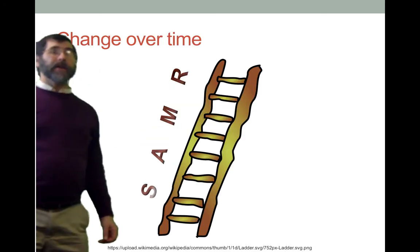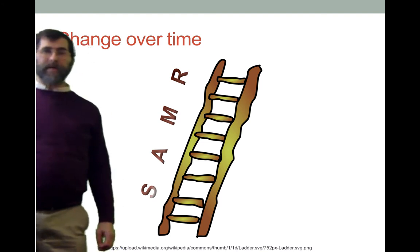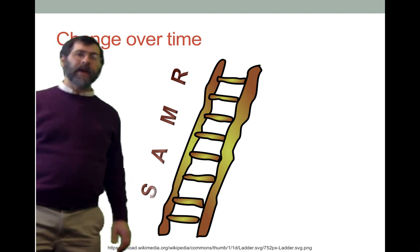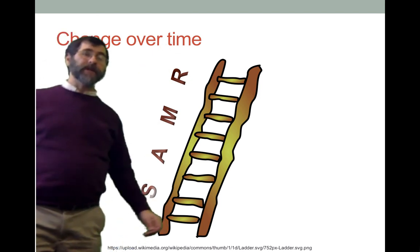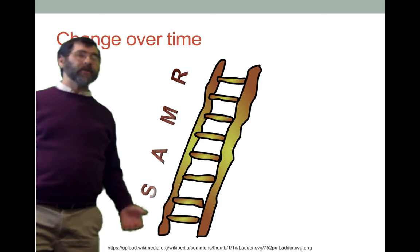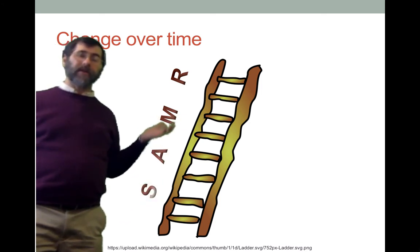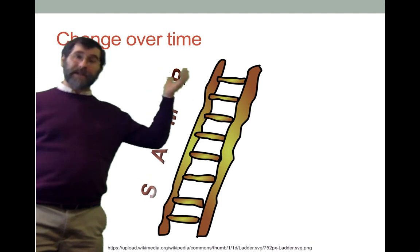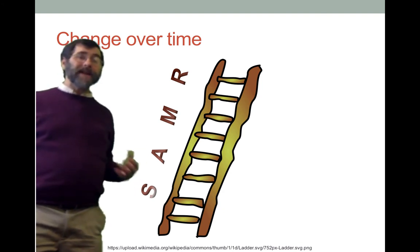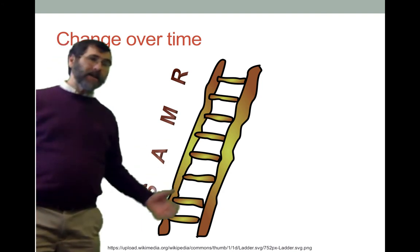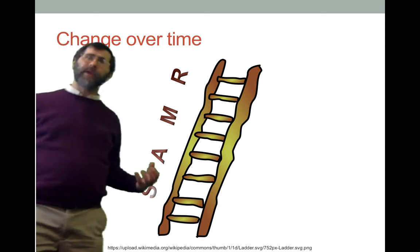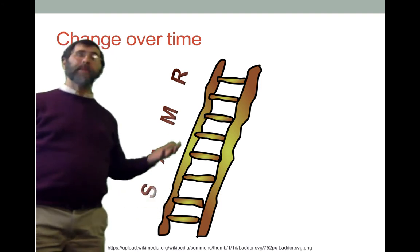You're all familiar with the SAMR model. In the SAMR model you move from substitution to augmentation to modification and to redefinition. We kind of think of it as a ladder, and we can climb that ladder moving up the different areas of the model. While some substitution is fine, we want people to progress to augmentation, particularly modification and redefinition. You wouldn't expect somebody to start a new innovation and immediately jump into redefinition. Usually they'll start at substitution, doing the same old things they've done before, but then your job is to help them move up this ladder.